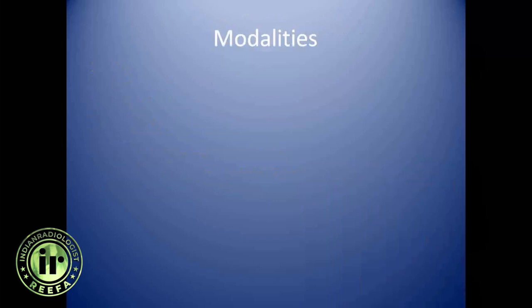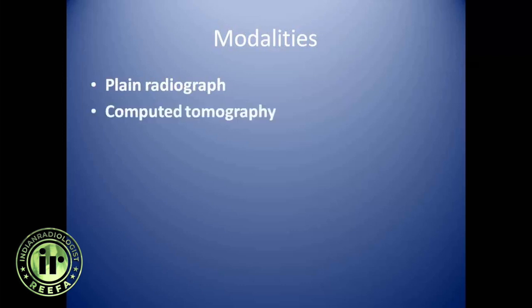The modalities we use for evaluation of bone tumors start with the plain radiograph, which is the best and most important radiological investigation for making a diagnosis of bone tumor. CT scan is indicated only for certain reasons — for example, if the tumor is located in an area difficult to evaluate on plain radiograph, such as the sacrum or scapula. CT is also good for evaluating matrix mineralization and cortical destruction.